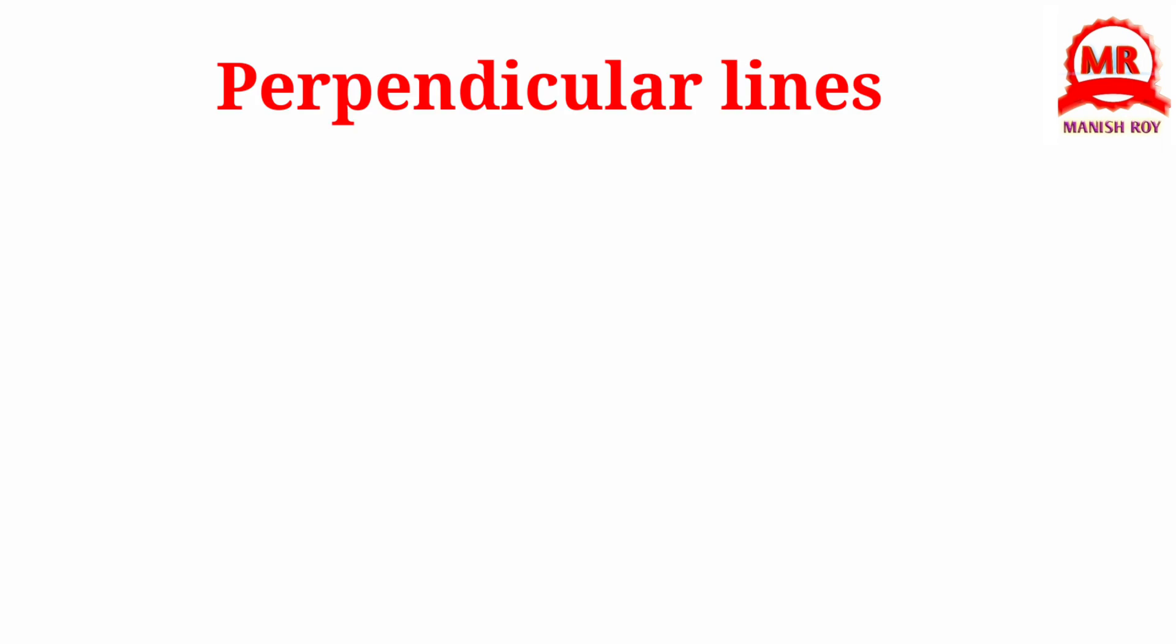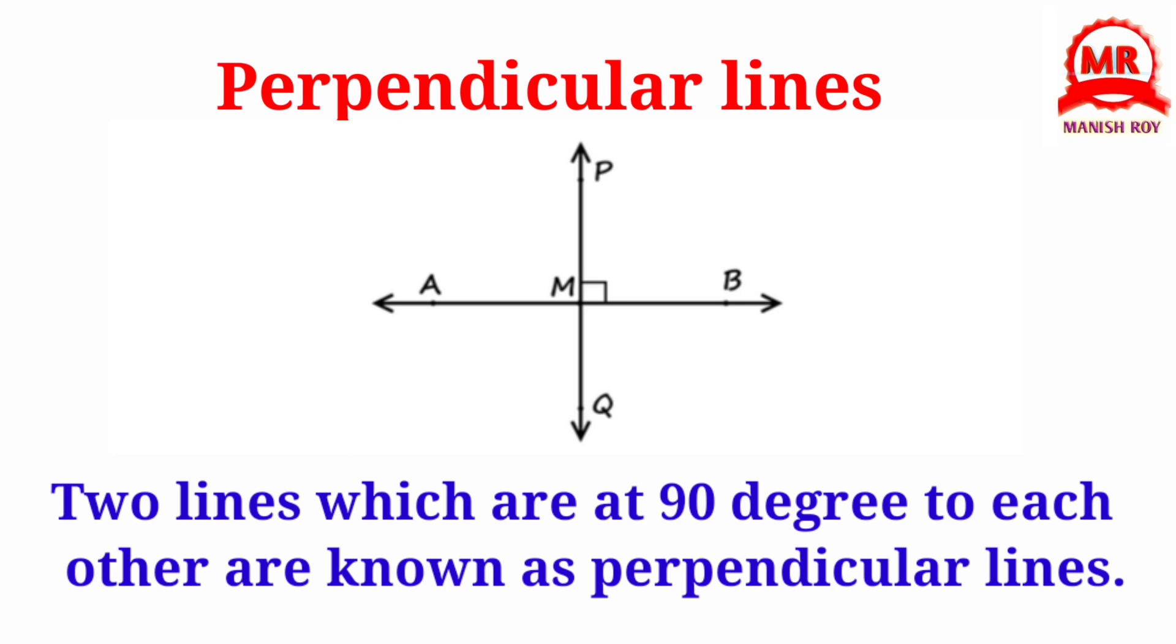Perpendicular Lines. Two lines which are at 90 degrees to each other are known as perpendicular lines. Look at the lines AB and PQ which intersect each other at point M, making a 90-degree angle at point M. Hence, Line AB and Line PQ are perpendicular to each other.